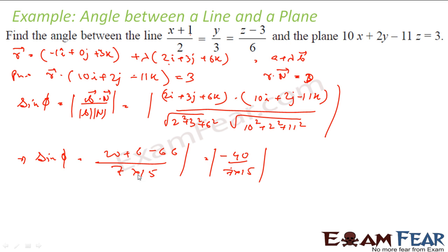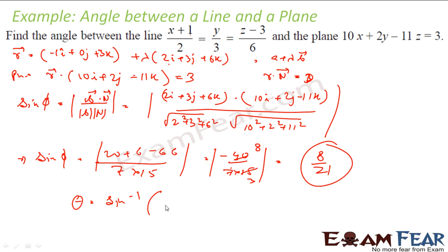We take the absolute value, so sin φ = 40/105. Simplifying, this becomes 8/21. Therefore φ = sin⁻¹(8/21). This is the angle between the plane and the line. I converted the line to vector form, converted the plane to vector form, found b and n, and the sine of the angle between them gives the angle between the line and the plane.